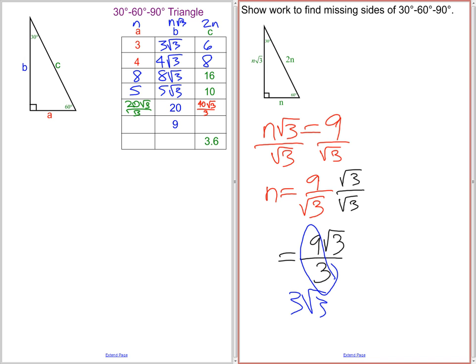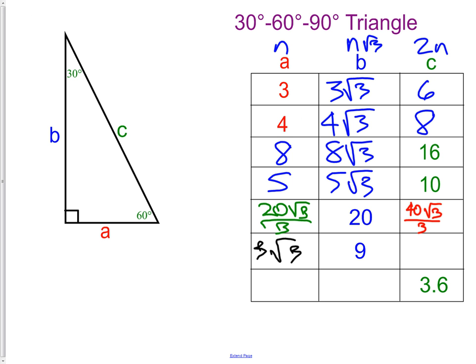Going back to our table, we would put in 3 root 3. And to get the c or the 2n side, I multiply that by 2, which would give me 6 root 3.